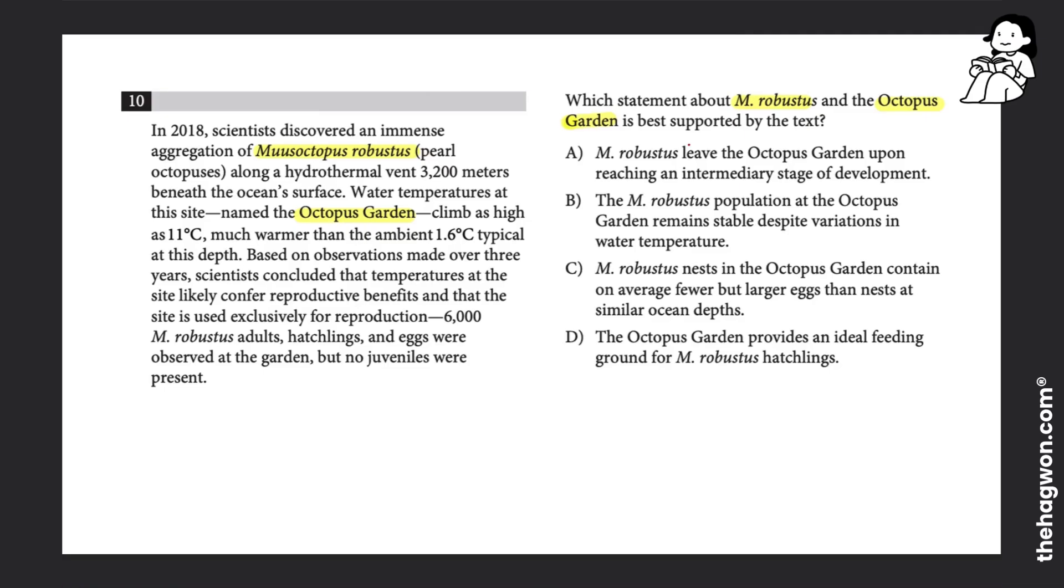And I continue to skim, and I notice at the very end we have M. Robustus and the garden in a single sentence. So I know this is the sentence that I want to read, because in a detailed question, we're looking for one sentence that matches the information the question is asking me to find.